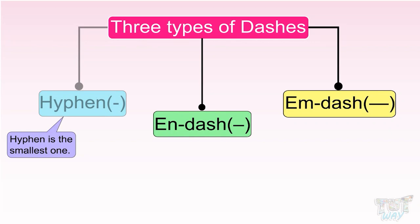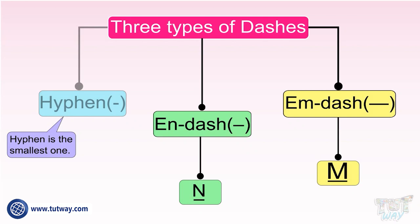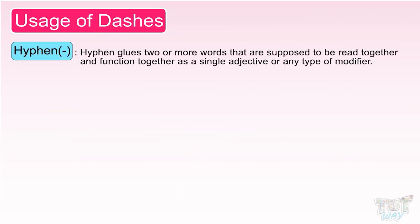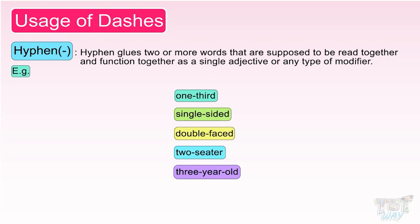Hyphen is the smallest one. An easy way to remember the difference between N dash and M dash is to visualize the N dash as the length of the letter N, and the M dash as the length of the letter M. Hyphen glues two or more words that are supposed to be read together and function together as a single adjective or any type of modifier — one-third, single-sided, double-faced, two-seater, three-year-old. These words are glued to each other with the help of hyphen and act as a single word, single adjective, or single modifier.